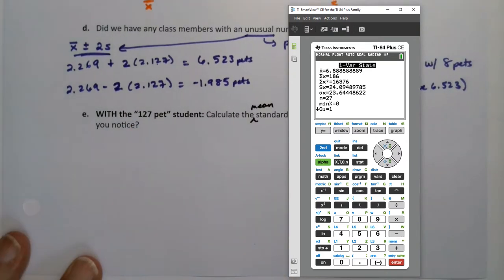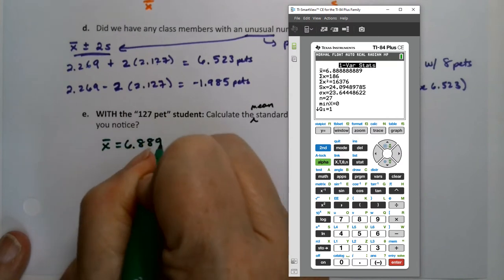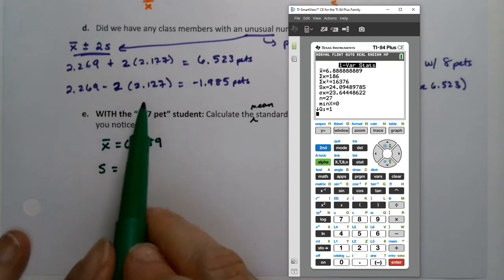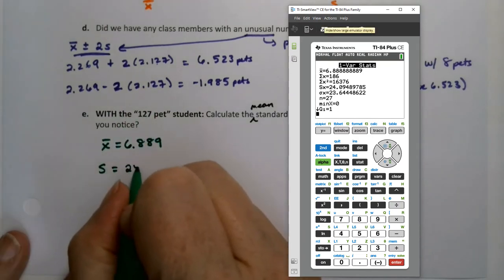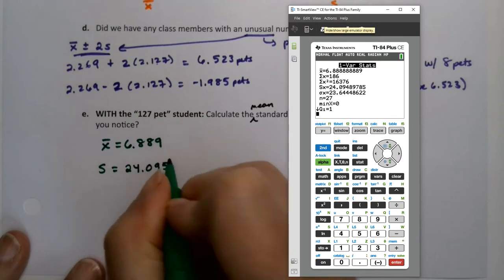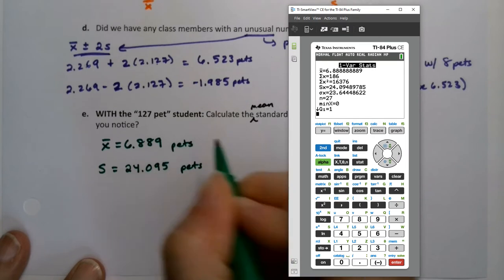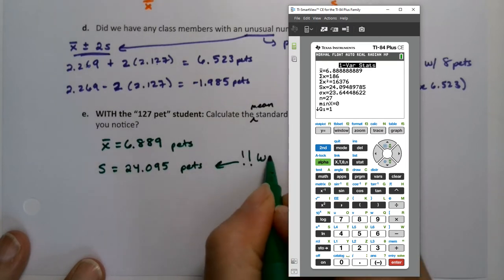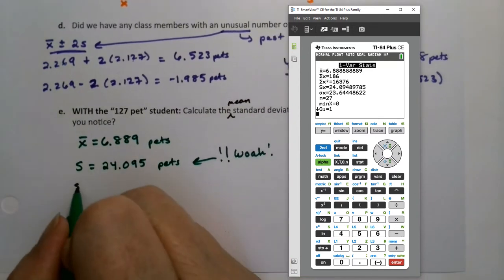So I'm going to go to stat, edit, and go to the bottom of the list and type in 127. So I'm going to go to stat, calculate one variable and rerun it. And I want you to notice what happens. We already knew the mean and the standard deviation. The mean becomes 6.889. But now we see that s has turned from 2.127, which is what it was before, to look at that number: 24.095. It's huge. Absolutely huge.